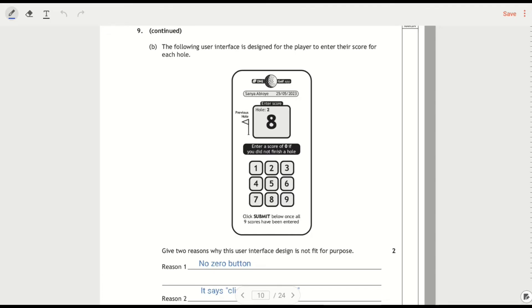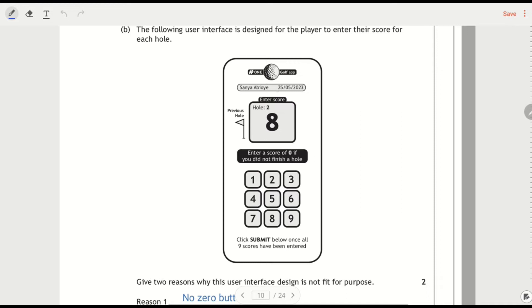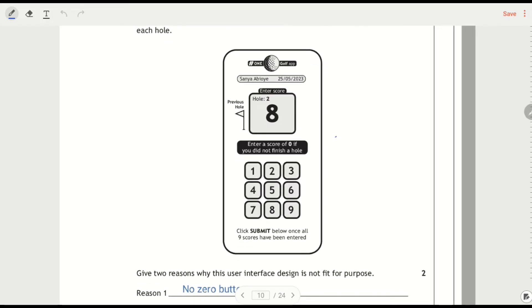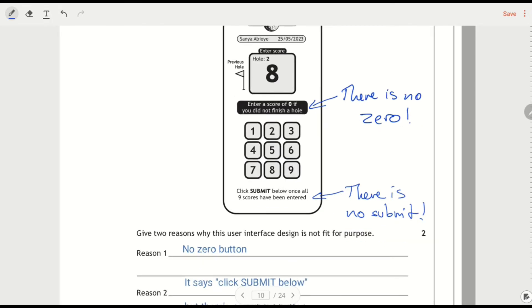The following user interface is designed. We've got the logo up top, the name, previous hole button. It says enter a zero if you did not finish, but there is no zero. That's one of the things that's wrong with this. There is no zero button. It says click submit. No. There is no submit button. So there you go. Two easy things that are wrong with that.